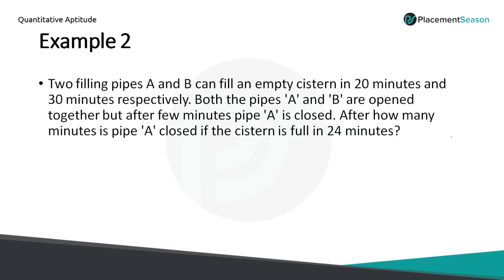Example 2: Two pipes A and B can fill an empty cistern in 20 minutes and 30 minutes respectively. Both pipes A and B are open together, but after a few minutes pipe A is closed. After how many minutes is pipe A closed if the cistern is full in 24 minutes? The difference from the previous problem is that here we have to find when the pipe was closed, given the total time taken.